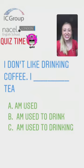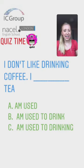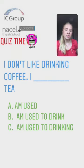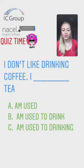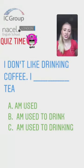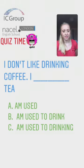Number three: 'I don't like drinking coffee. I blank tea.' The options are: A — am used, B — am used to drink, or C — am used to drinking. Is it A, B or C?